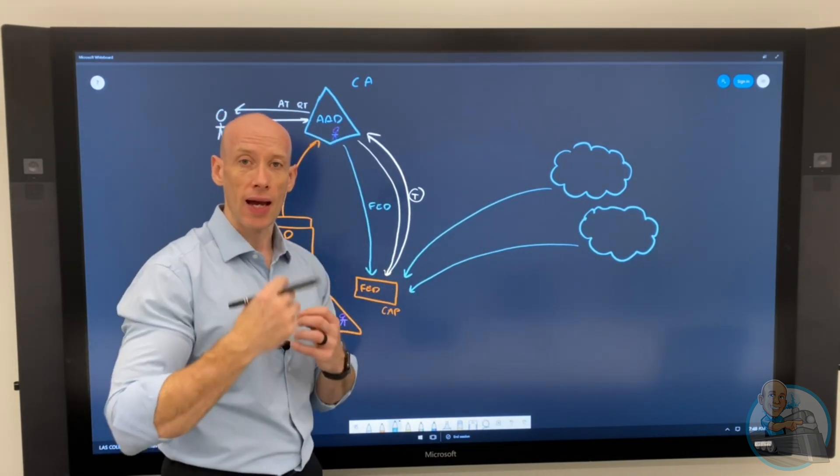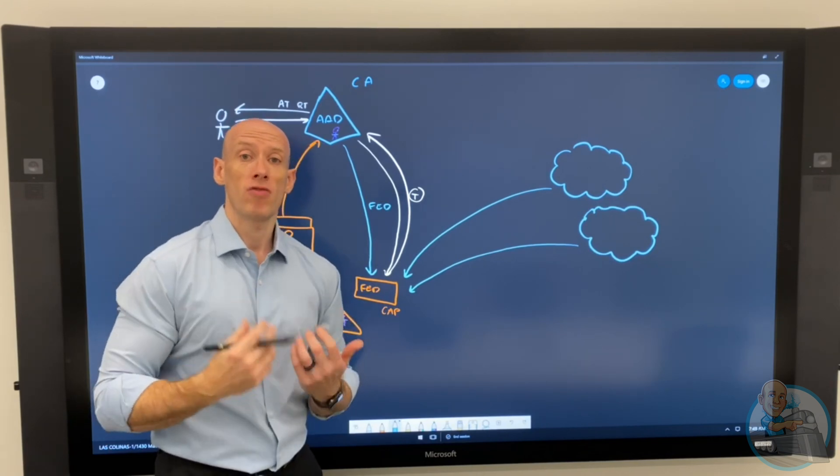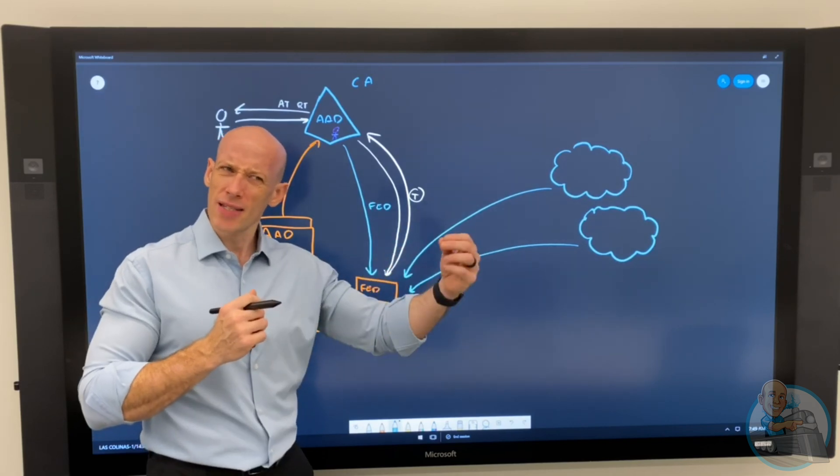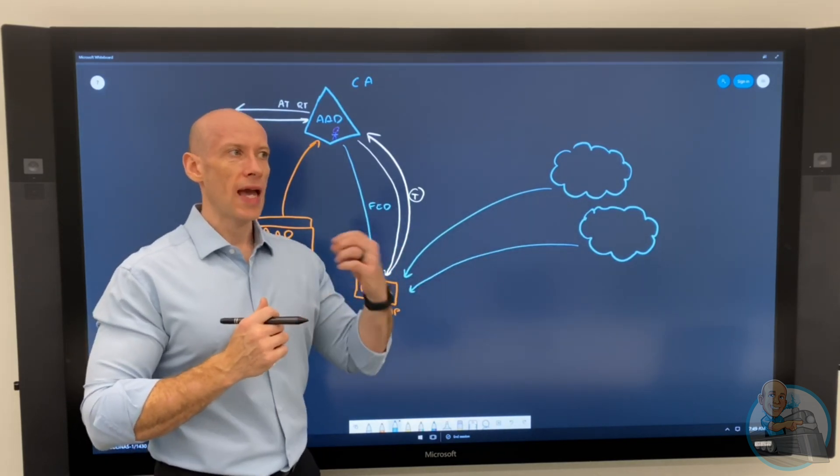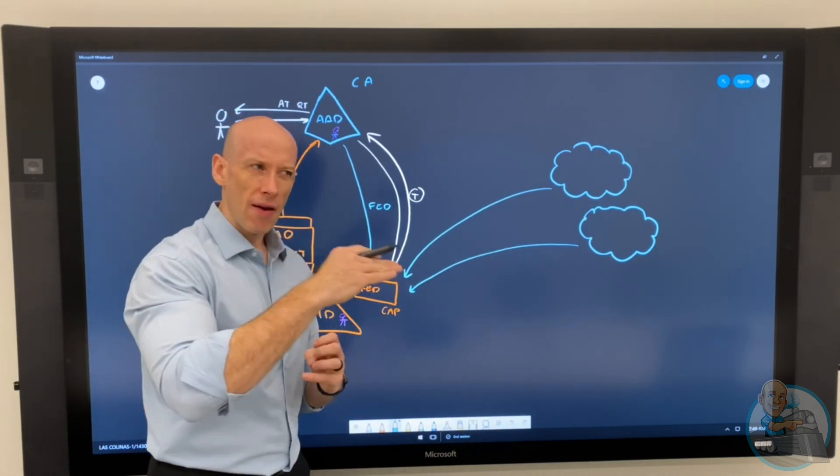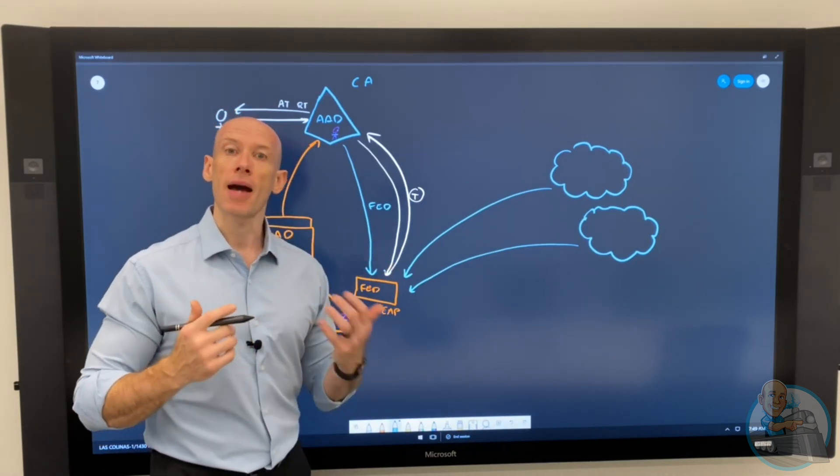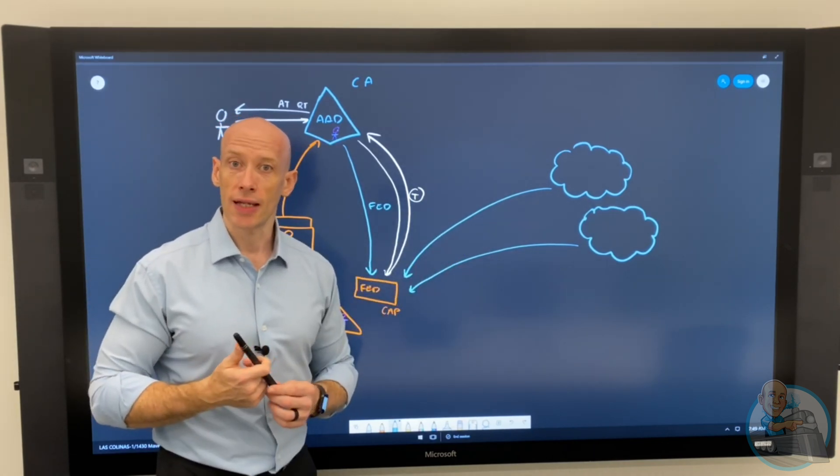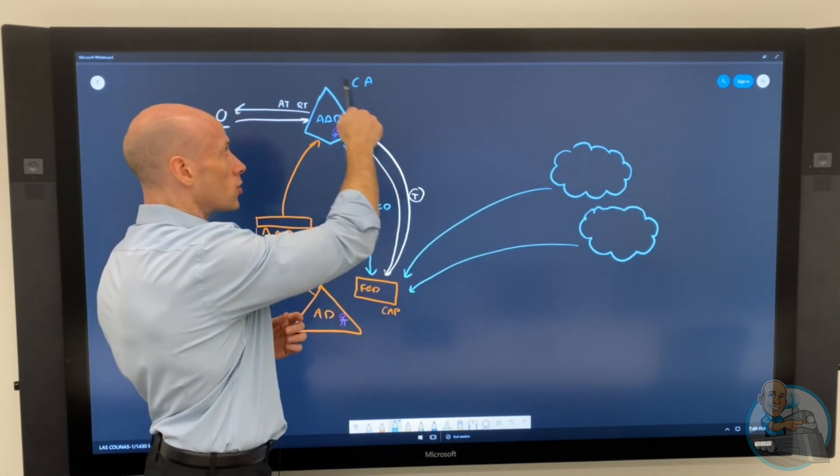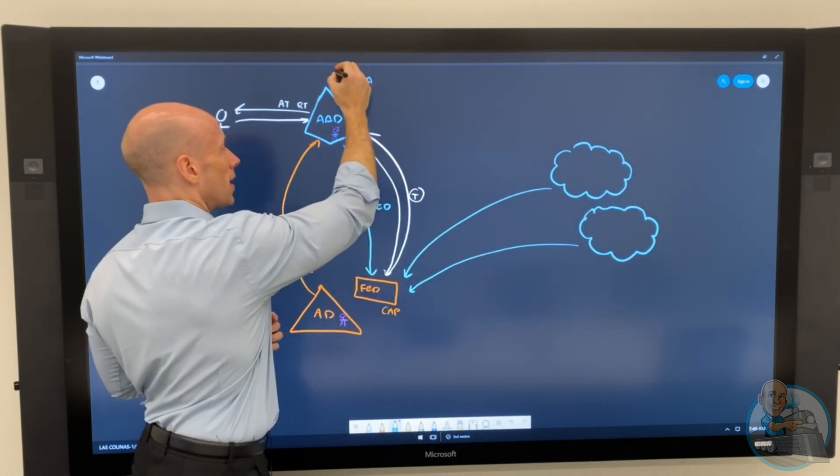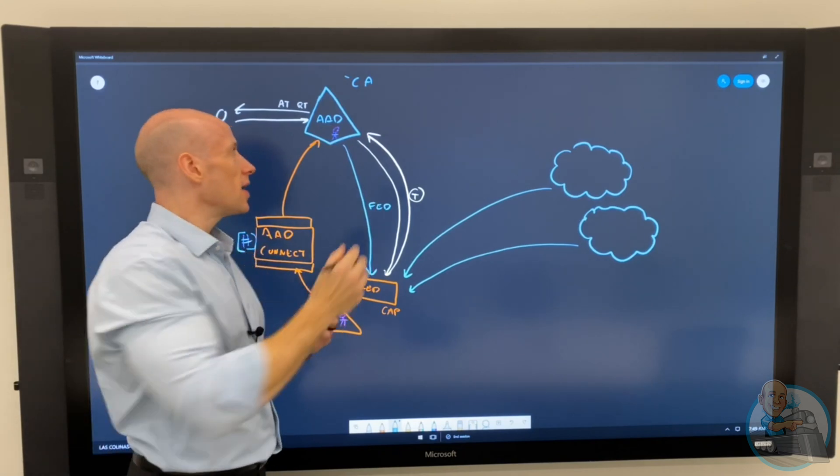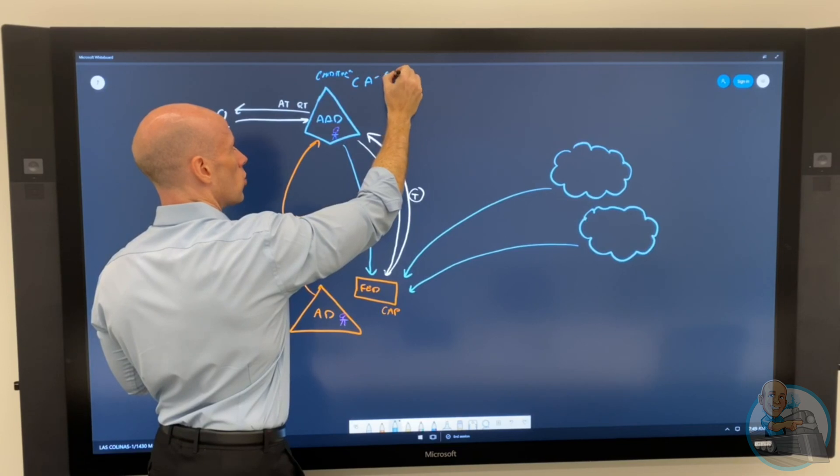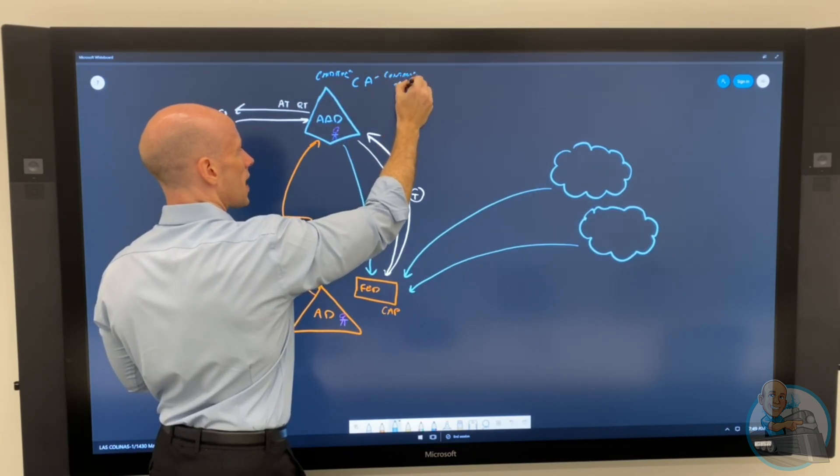And again, a big one of those conditions could be session risk, which is where identity protection can come in and give me a session risk kind of score for that particular session. And I could use, hey, there's heightened risk, let's make them MFA. So control could be MFA. I might also drive MFA through things like privileged identity management, I'm elevating my privileges. So let's make them do a stronger authentication. So I have the conditional access as well. So I have kind of that combination of various conditions and then various controls. And again, a common one of that is MFA.